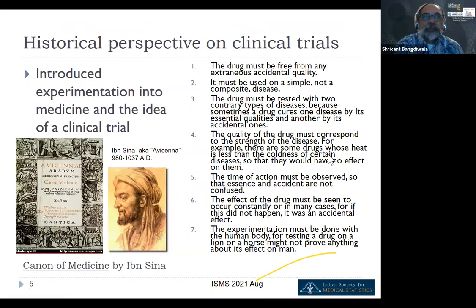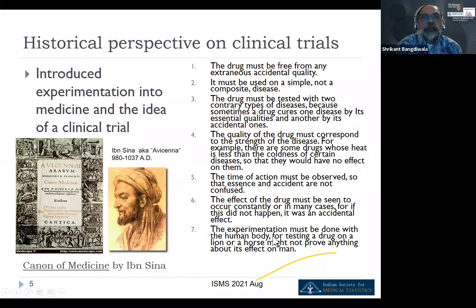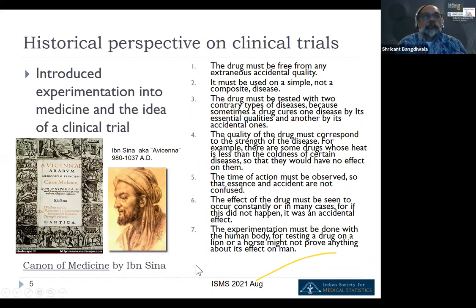A little historical perspective — where do these things come from? About a thousand years ago in the Middle East, Ibn Sina — known as Avicenna — actually introduced experimentation into medicine and the idea of a clinical trial. Some of the tenets he put down in his Canon of Medicine about how drugs can be tested, the quality of the drug, the time of observation, and that it has to be a common effect seen in everybody, are actually what we use today when we talk about clinical trials.